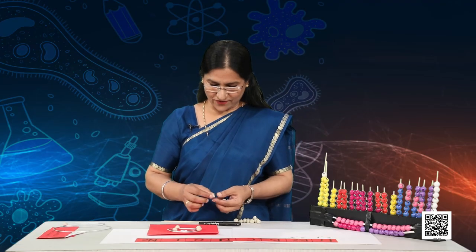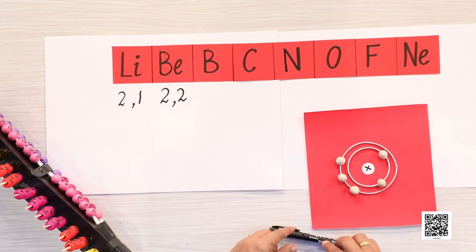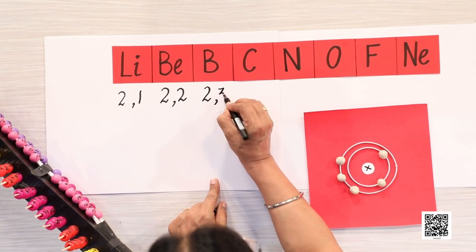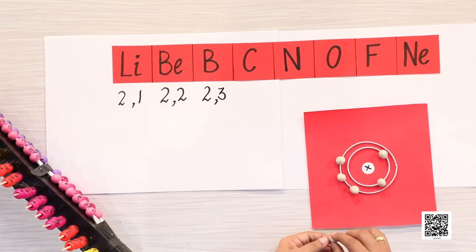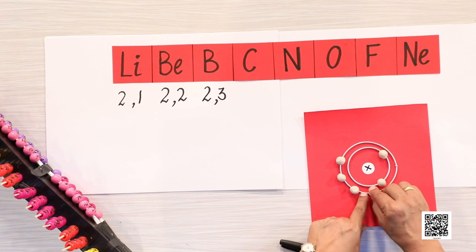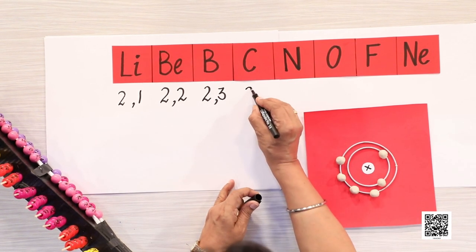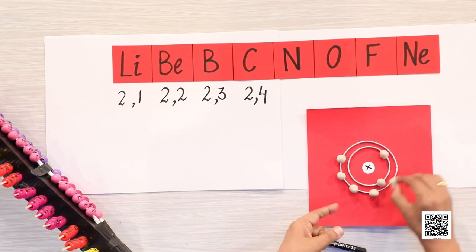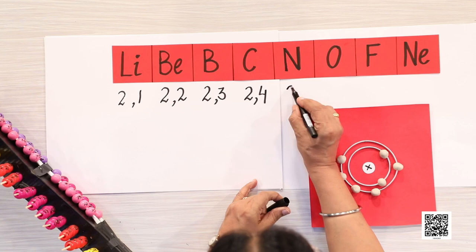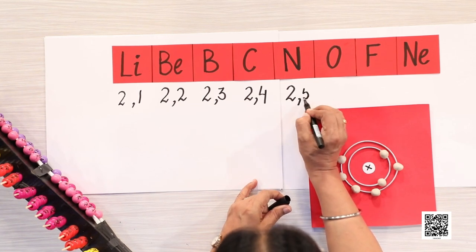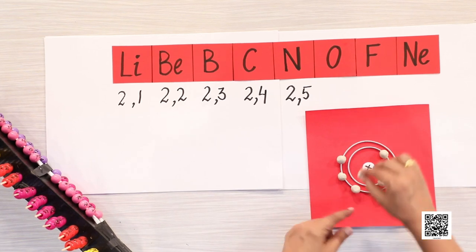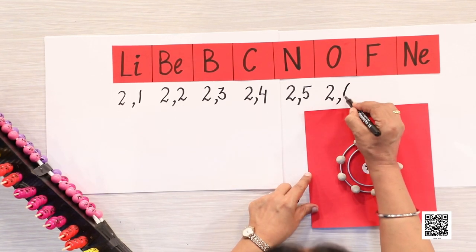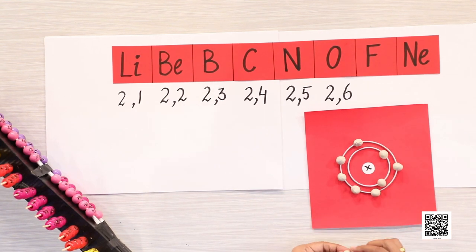Boron has five electrons — again the extra electron is being added in the same second shell. Carbon has two electrons in the first shell and four in the outermost shell, giving 2, 4. Nitrogen becomes 2, 5. For oxygen, one more electron is added, giving 2, 6.